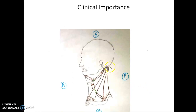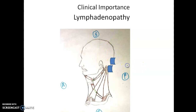Another clinical importance: there are occipital lymph nodes in this region. Enlargement of these lymph nodes — occipital lymphadenopathy — suggests there is infection in the scalp area.